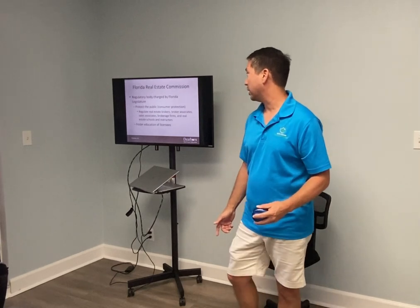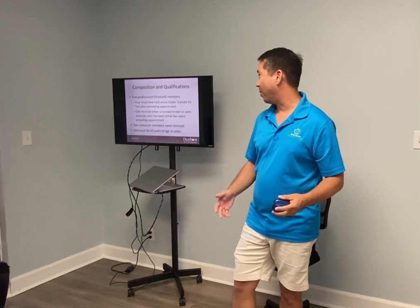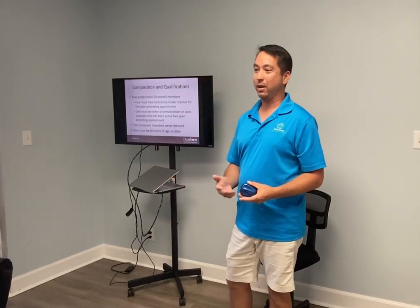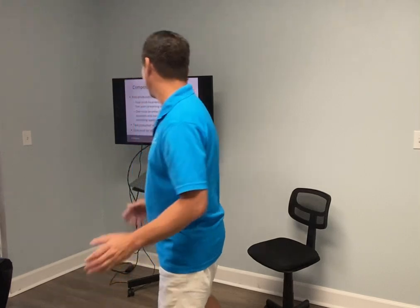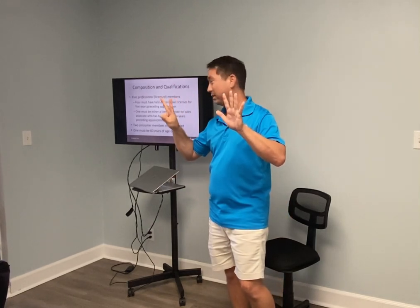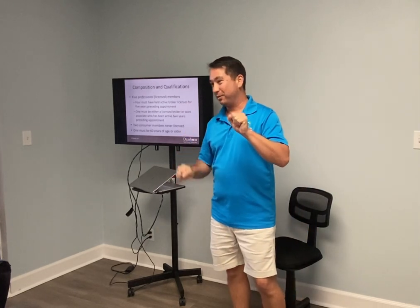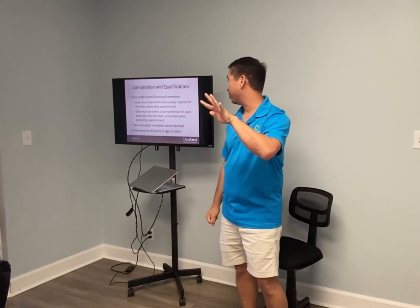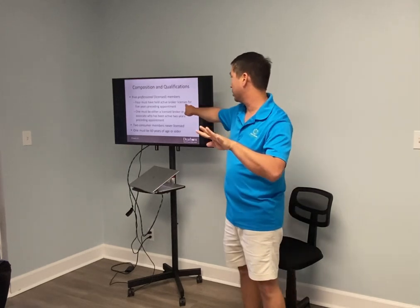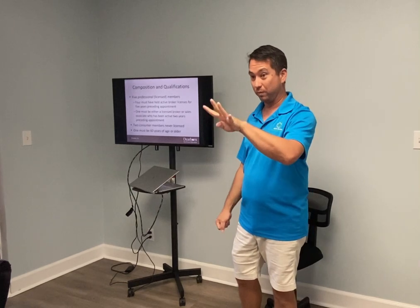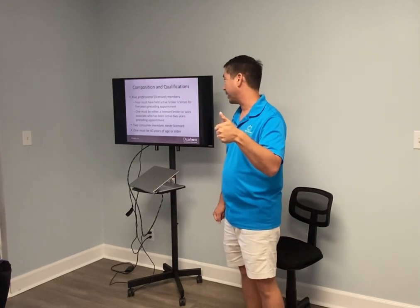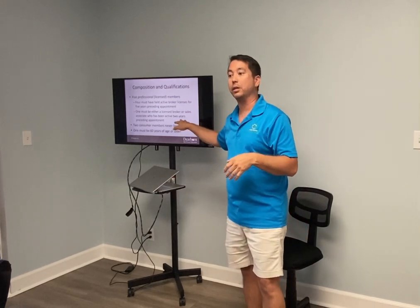The real estate commission is a group of seven individuals — five licensees and two consumers. Four of those five licensees have to have held a broker's license. They don't have to be active at the time they're on the commission, but they had to have held an active broker license for the five years preceding appointment.